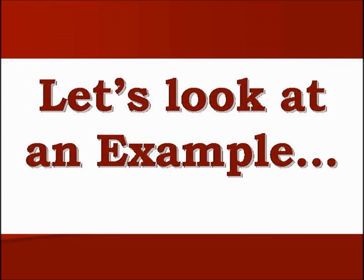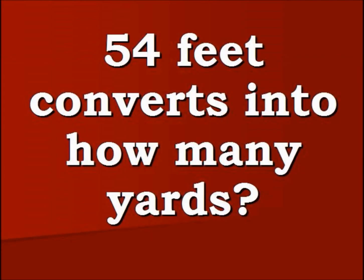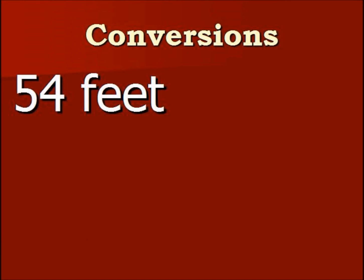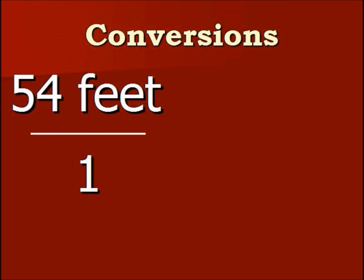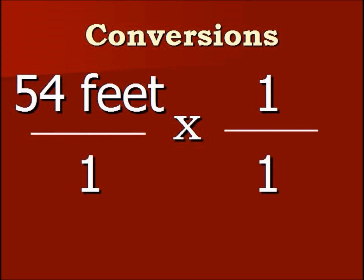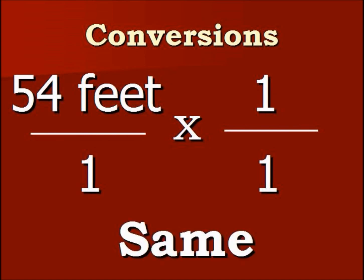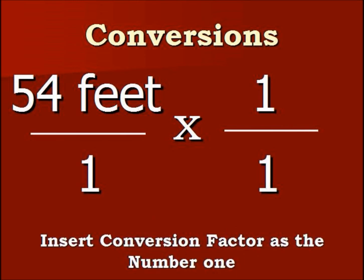Let's look at an example. We have 54 feet — it converts into how many yards? So let's set up our problem. We have 54 feet divided by one, then we multiply that by one over one. By multiplying and dividing by one, we're not changing any of the values. What we're trying to do is show the setup of how we're going to insert the conversion factor or the labels by just multiplying or dividing by one.